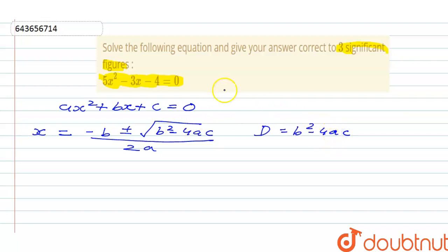So we will compare both equations and then we will solve. The x² coefficient is a, so a will be equal to 5, then b will be equal to -3, and c will be equal to -4.